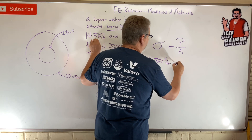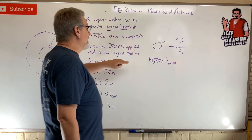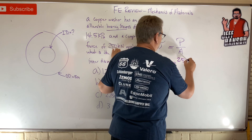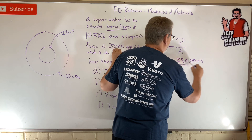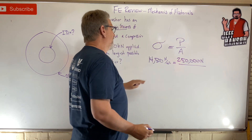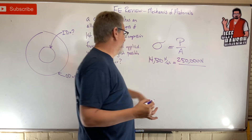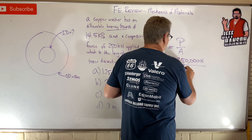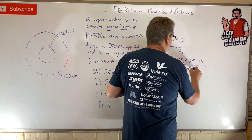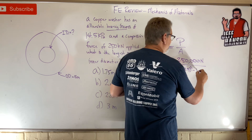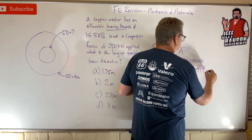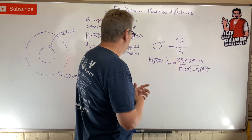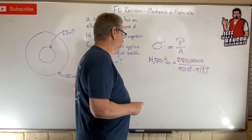Sigma equals P divided by area. P is in kilonewtons, so convert: 250,000 newtons. The area needs to be in meters squared — it's pi times the outer radius (2.5) squared, minus pi times the inner radius (d over 2) squared.